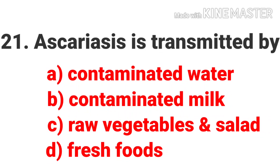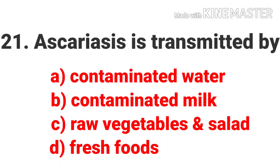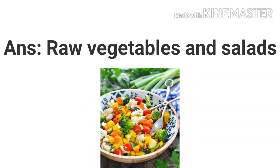The next question is: Ascariasis is transmitted by which route? Options are contaminated water, contaminated milk, raw vegetables and salads, and fresh food. The answer is raw vegetables and salads.